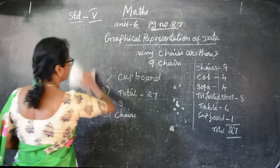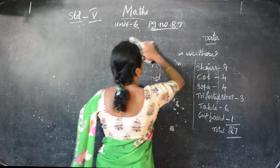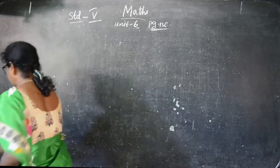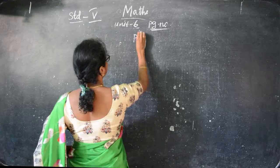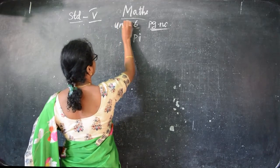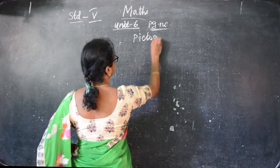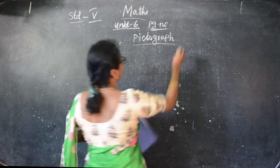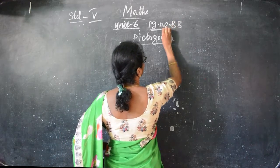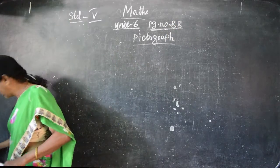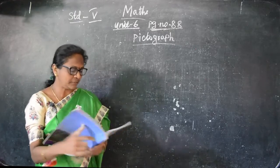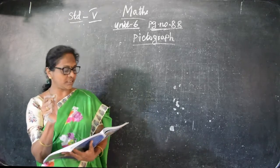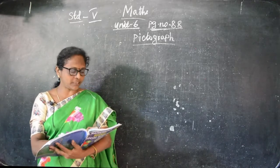And next one is the pictograph. Page number 88 - that is the pictograph. Information can be easily understood when it is represented in pictures. If pictures come to you, you can learn the lesson easily. That is called the pictograph.